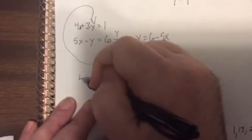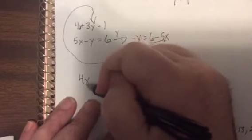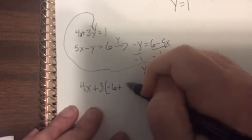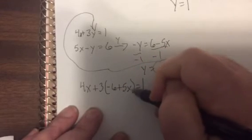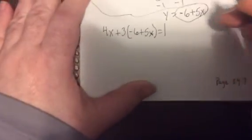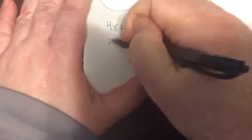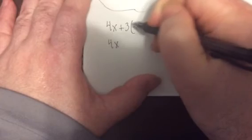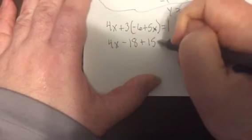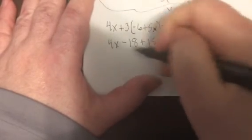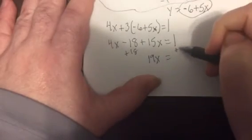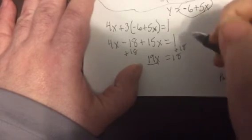The other one. So I'll actually bring it over here. 4x plus 3 times negative 6 plus 5x equals 1. Watch this. That's where I mess up. I always write it sloppy. Then I think it's a y. So be very careful. Sorry about all the movement. Makes you a little dizzy. So 4x. 3 times negative 6 is minus 18. 3 times 5 is 15. So this would be 19x.